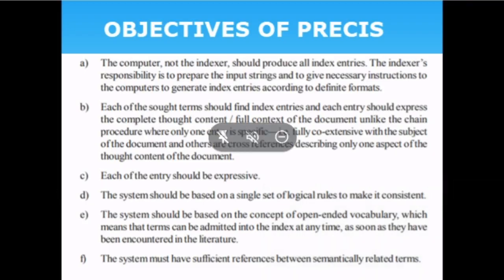The objectives of PRECIS: first, the computer, not the indexer, should produce all the index entries. The indexer's sole responsibility is to prepare the input strings and give necessary instructions to the computer. The indexer manually prepares the input strings only; based on those input strings, the computer will generate the index.